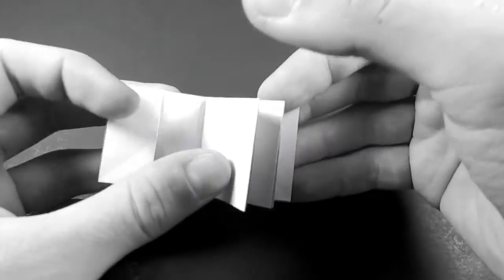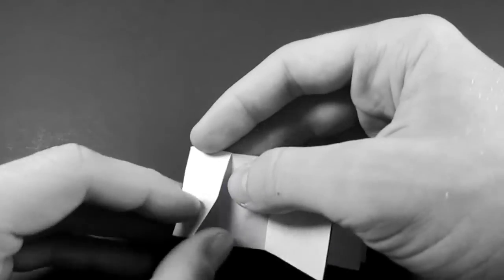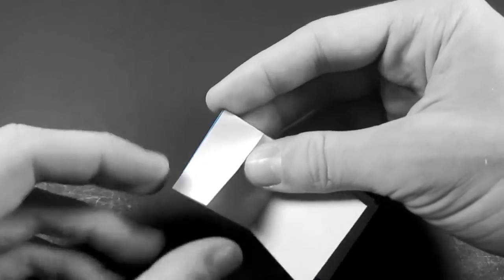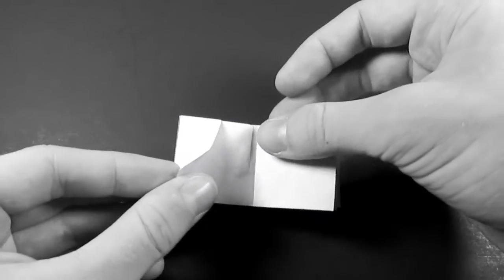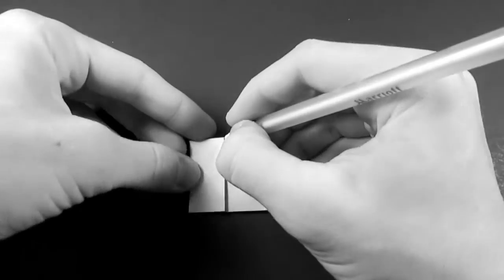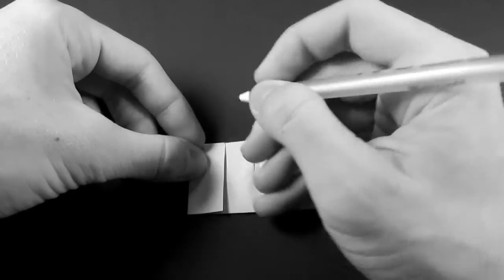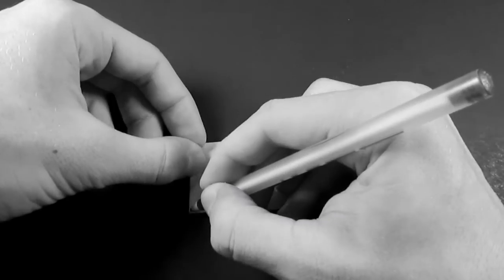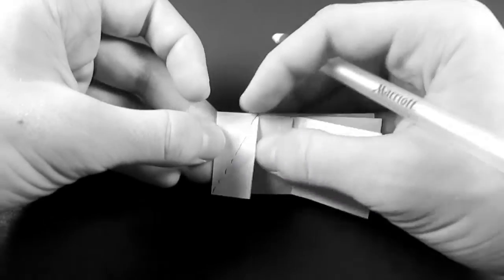And there's just one more optional step. If you want to get rid of these end flaps here, all you have to do is fold up between the two points here. It might be easiest if I draw these in. Excuse me a moment. Okay, so we're going to fold between these two points here. And I'll just draw that fold in. We're going to be making a valley fold like that.